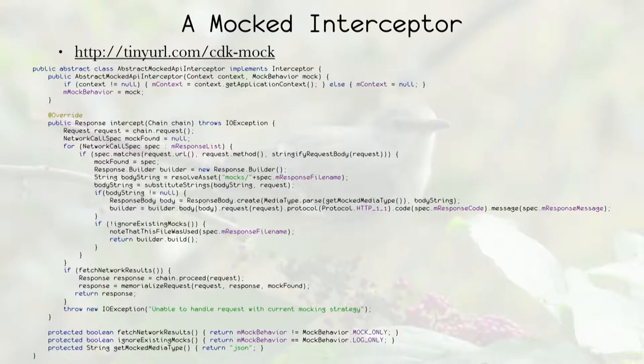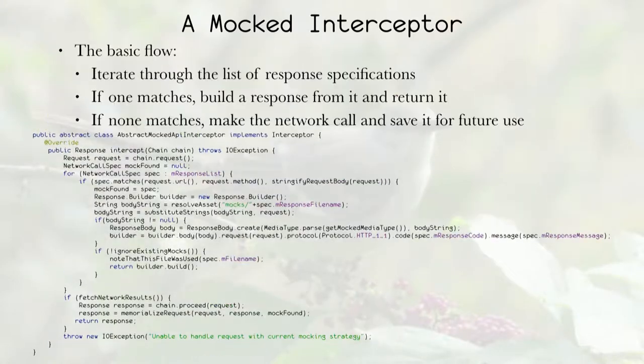And then sometimes we only want to log the calls that we get from the network because we know that our call isn't going to succeed if we use any mocked calls. I do that a lot when I'm setting up mocks for a complete flow. And I'll explain more about that in a bit. So the basic flow of the interceptor is it's just going to loop through a whole list of response specifications. If one matches, it's going to build a response from it and return it. And if none of them match, then we'll make the network call.